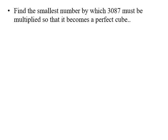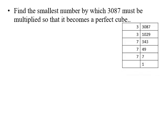Now here is a different type of question but based on the same logic: find the smallest number by which 3807 must be multiplied so that it becomes a perfect cube. To become a perfect cube, the prime factors must form groups of 3. The prime factors of 3807 are 3, 3, 7, 7, and 7 — here only 7 forms a complete group of 3, while the two 3s do not.